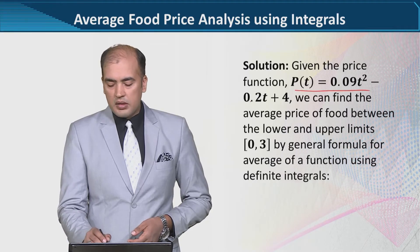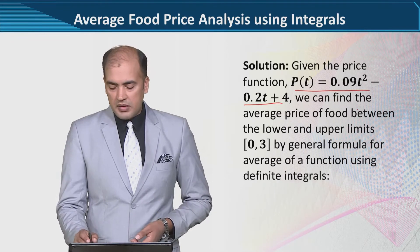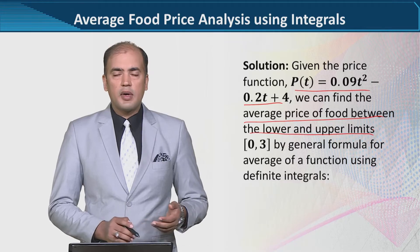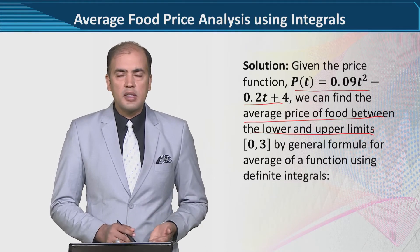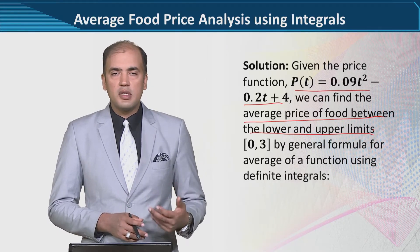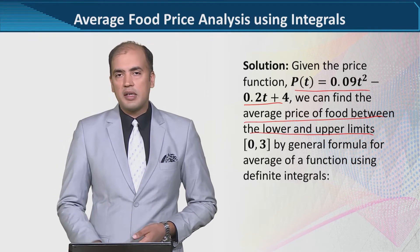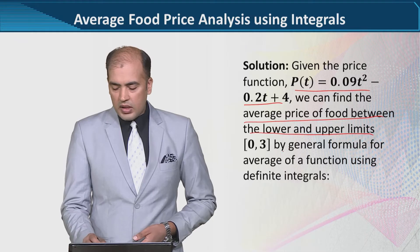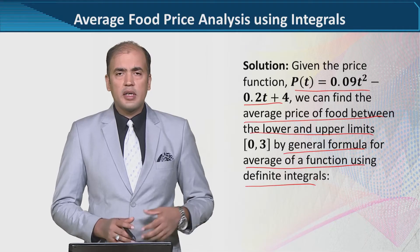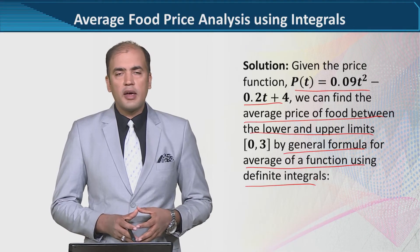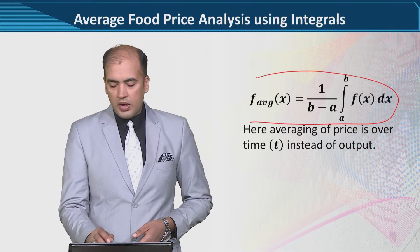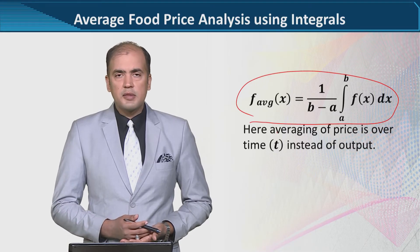This is the price function, which is dependent upon time. The average price is found between the lower and the upper limit. The upper and lower limits, as we have understood from the given statement, are for the first three months — so it starts from zero and ends at three. The general formula for the average of a function using the definite integral is given here, and we are going to apply it with the specific variables from this problem.